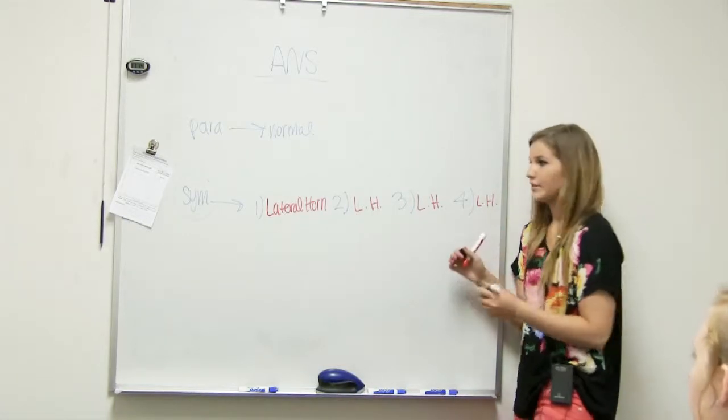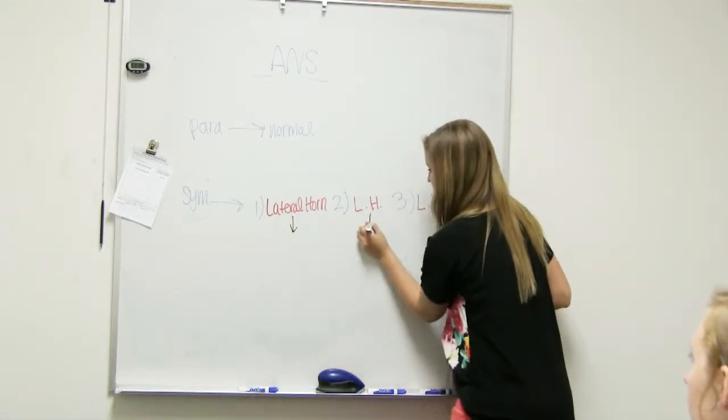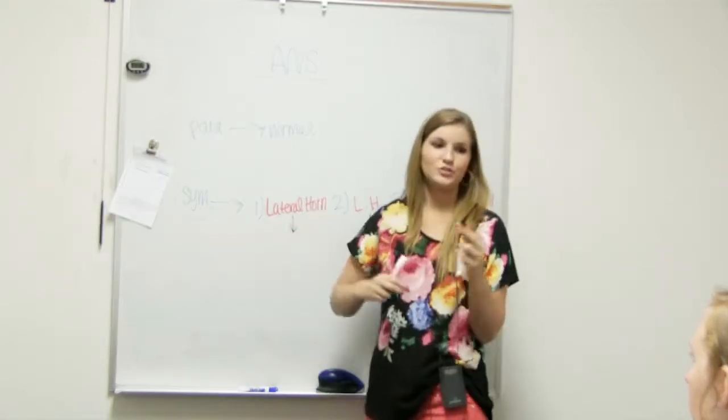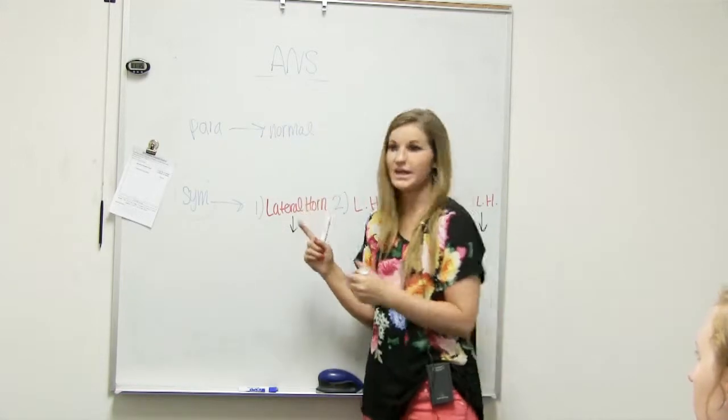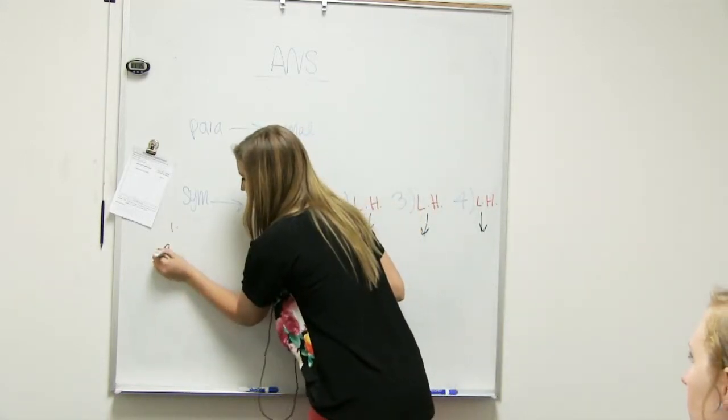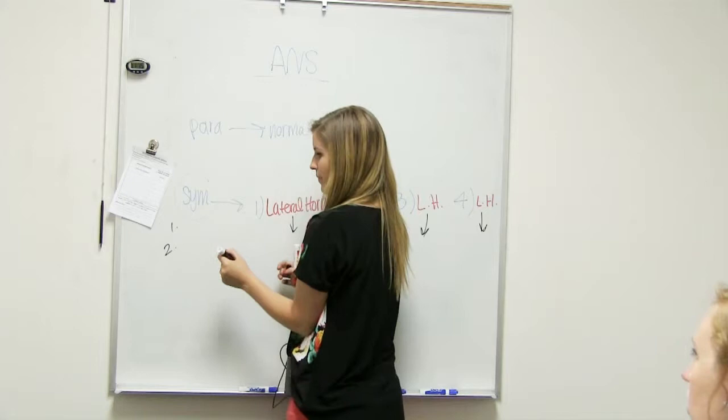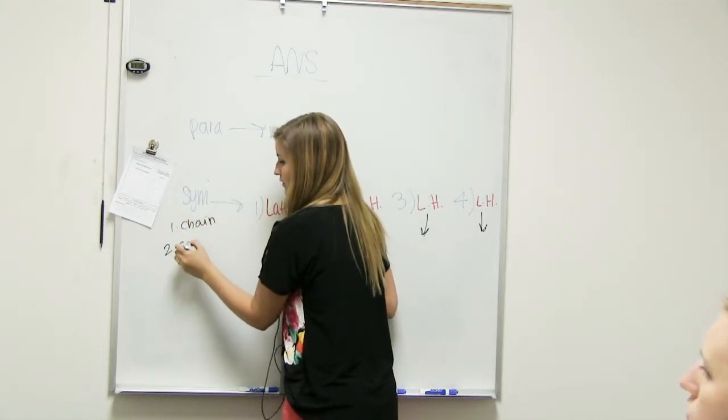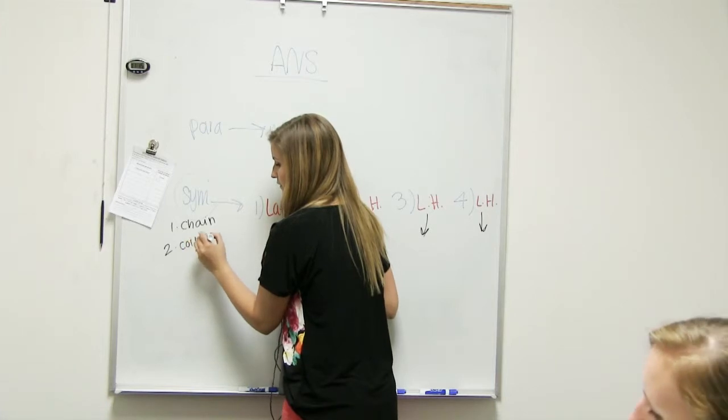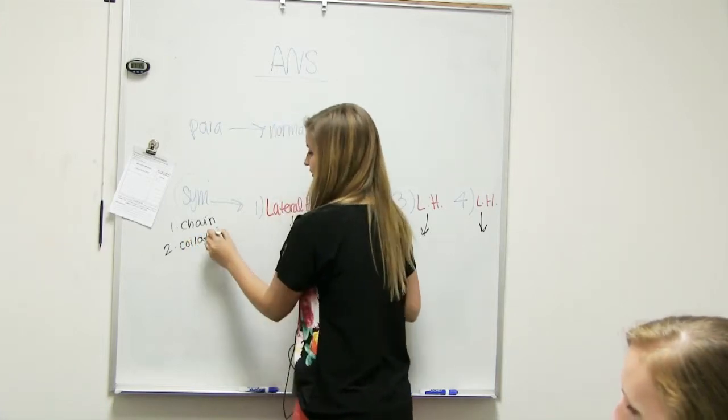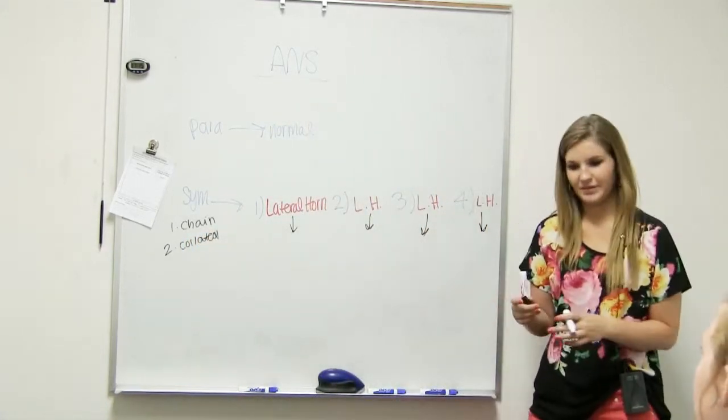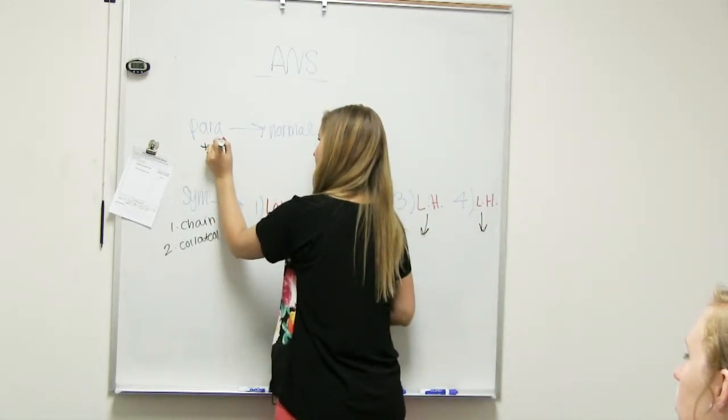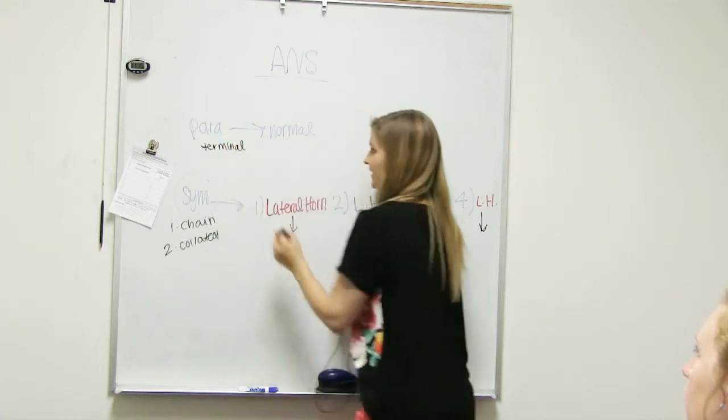So lateral horn, follow it, and then for sympathetic we have two different types of ganglions. For parasympathetic we just have one type. Do you know their names? No. So we have a chain ganglion and a collateral ganglion—that's the word, but it's spelled pretty funky. And then the parasympathetic one is a terminal ganglion.